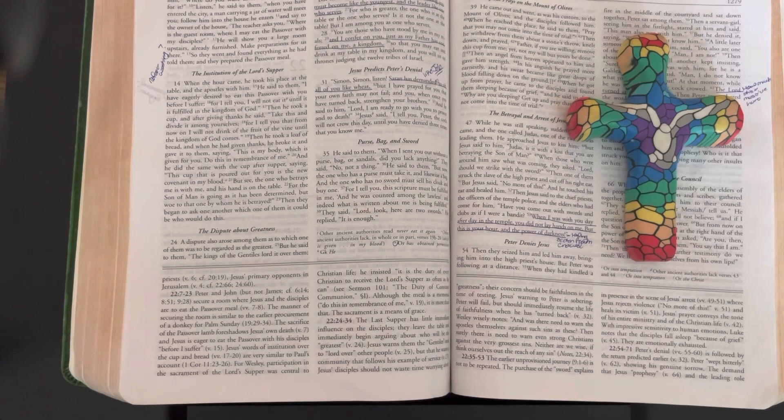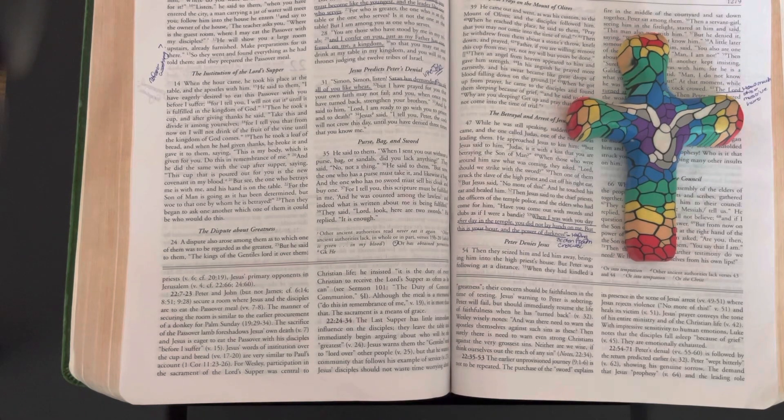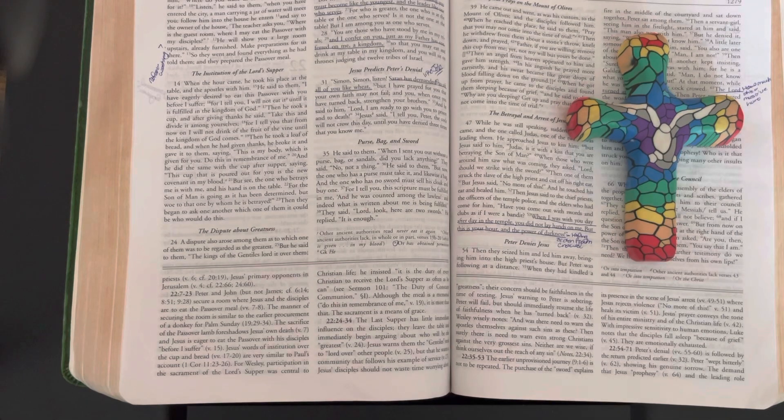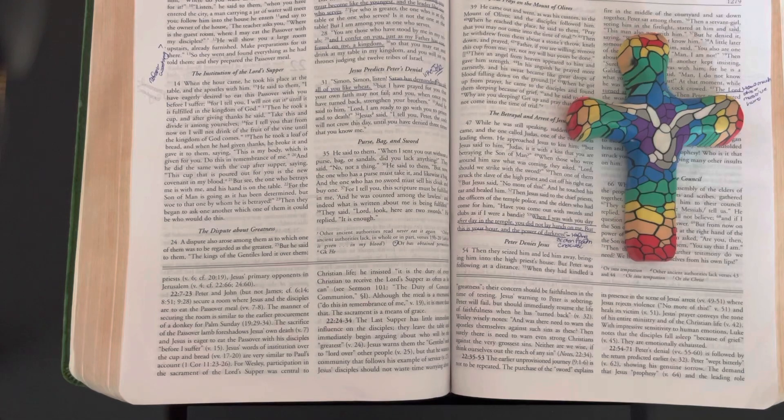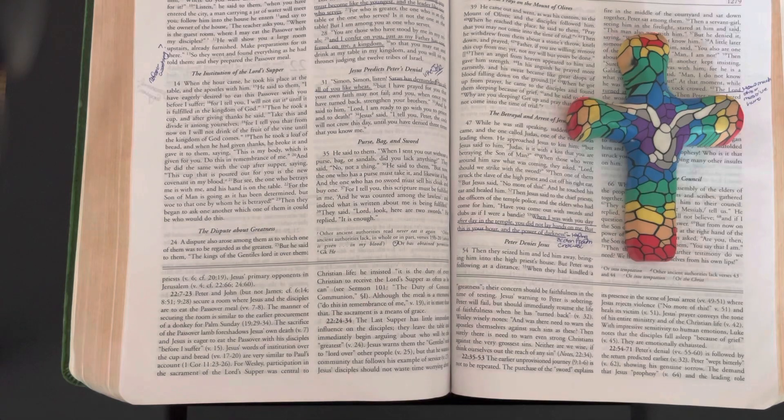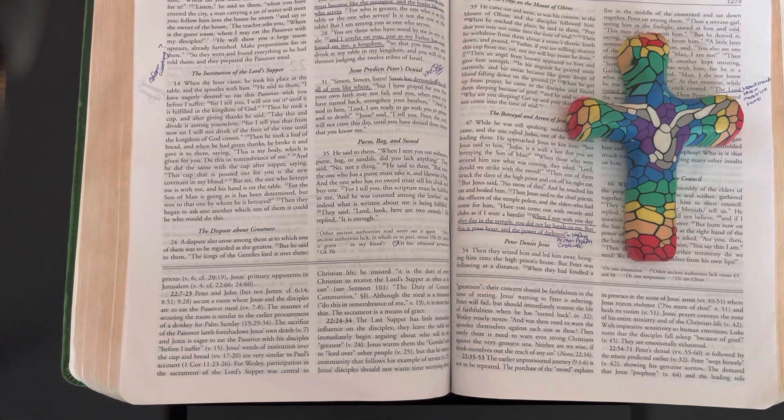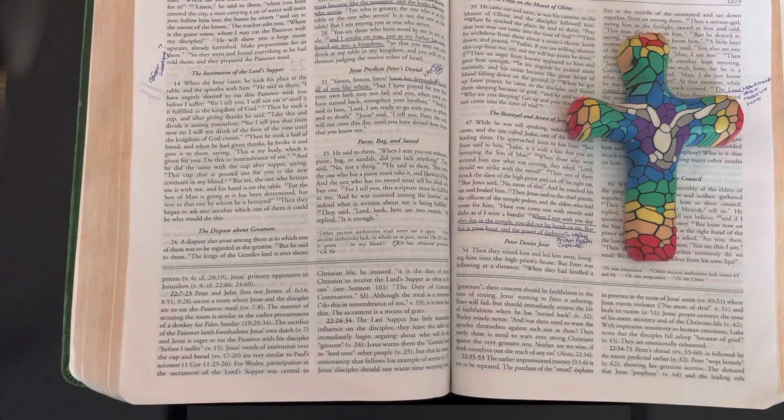When the hour came, he took his place at the table and the apostles with him. He said to them, "I have eagerly desired to eat this Passover with you before I suffer, for I tell you I will not eat it until it is fulfilled in the kingdom of God." Then he took a cup and after giving thanks he said, "Take this and divide it among yourselves, for I tell you that from now on I will not drink of the fruit of the vine until the kingdom of God comes."